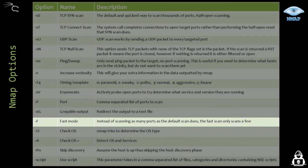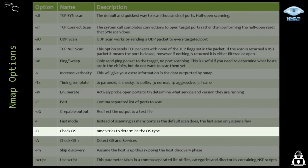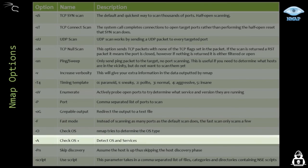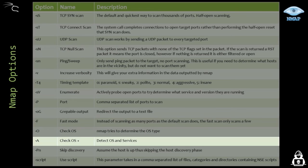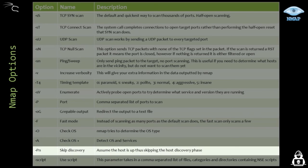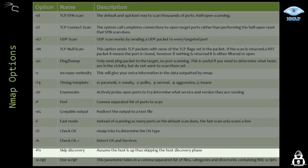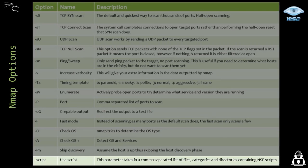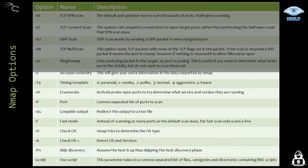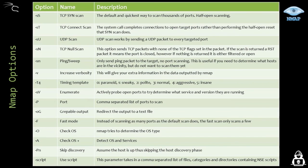The -F option is for fast mode. -O is to check the OS type. -A is to detect the OS and services running. -Pn is to skip discovery and just pretend that the host is up and running and implement the scans. And -sC is used to invoke the Nmap scripting engine, which is very useful for performing tasks beyond just port scanning.